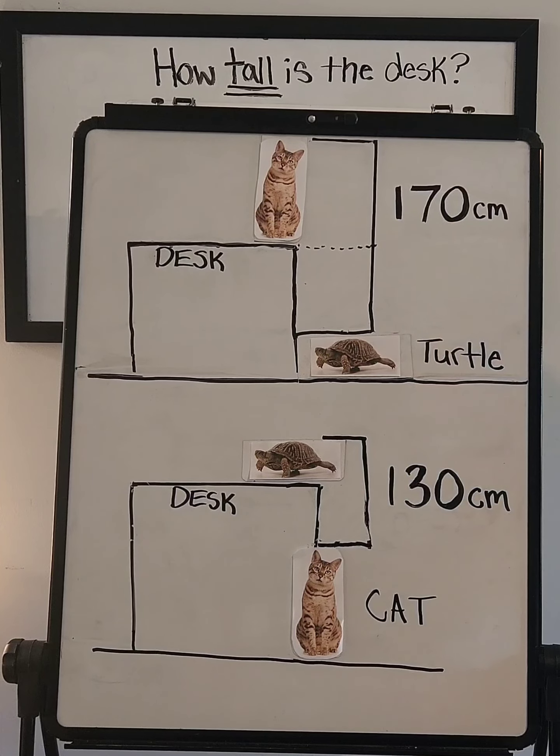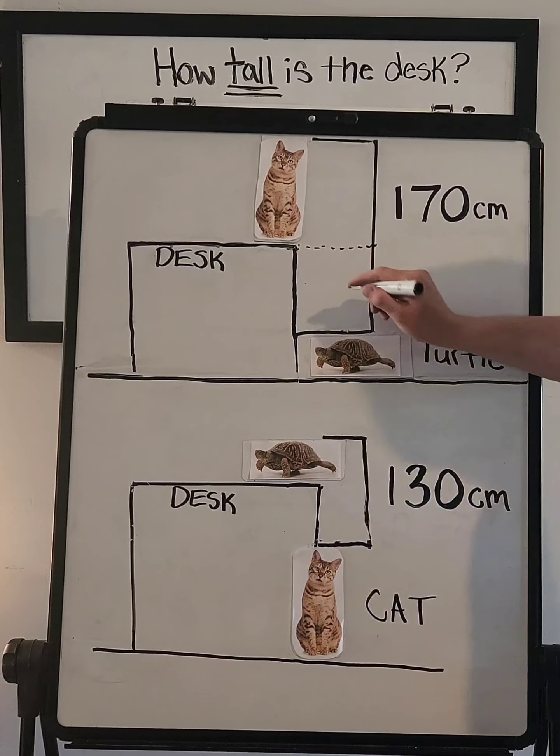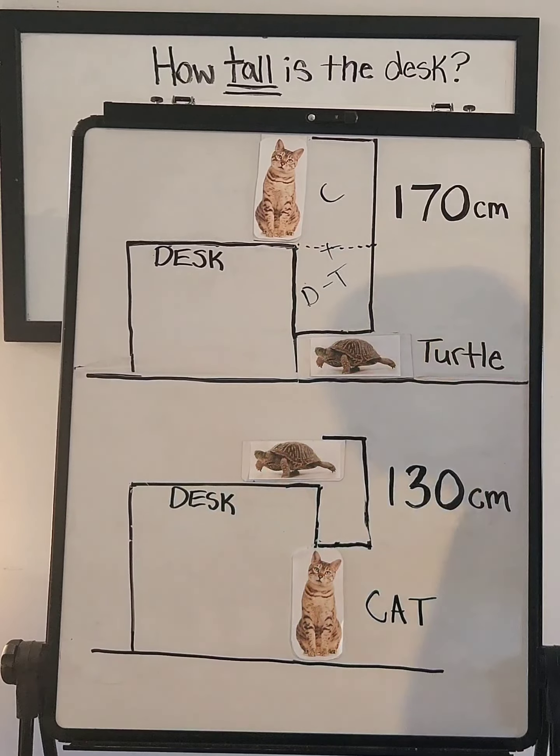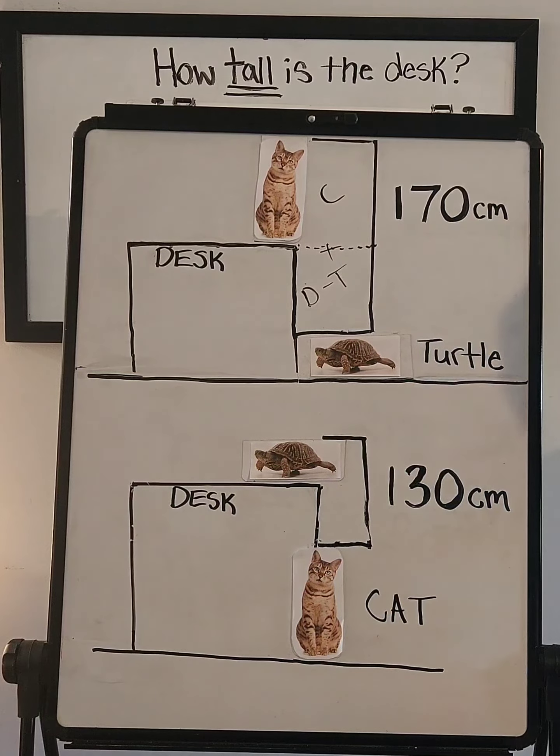is look at this as the desk minus the turtle, this part. So desk minus turtle, and this is cat. So if you add the cat plus the desk minus the turtle, it equals 170.